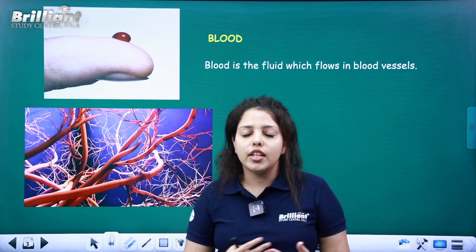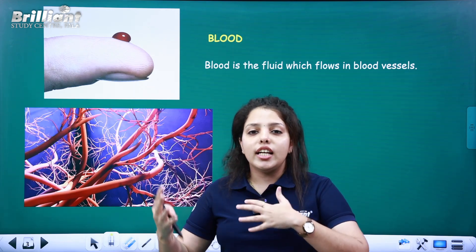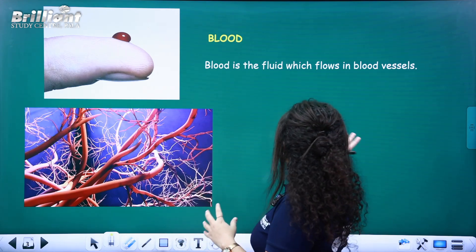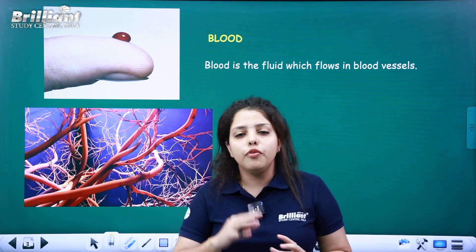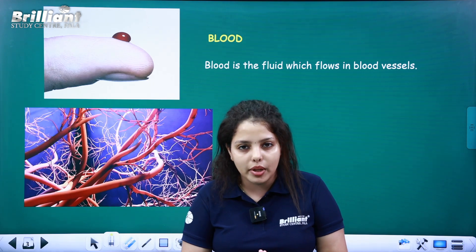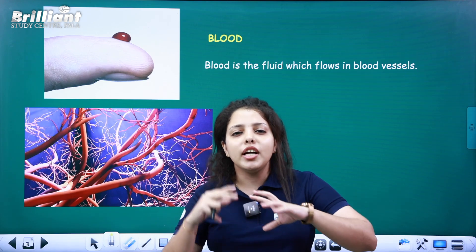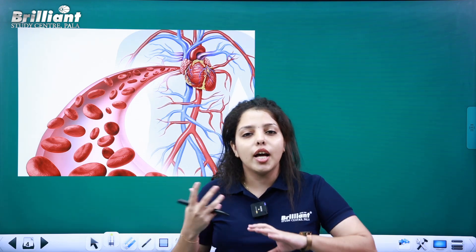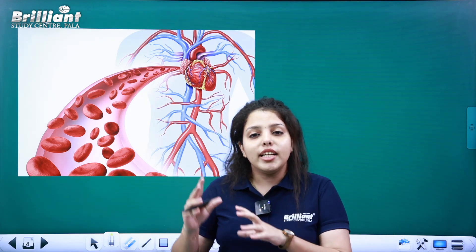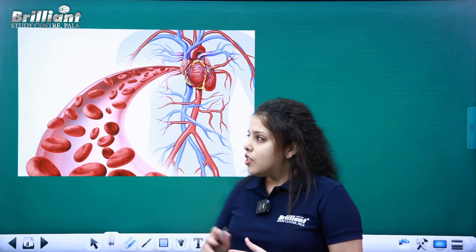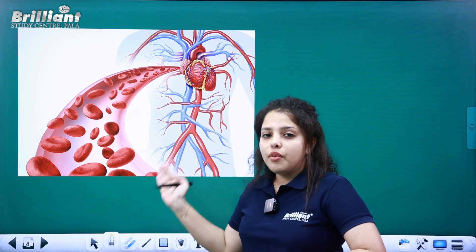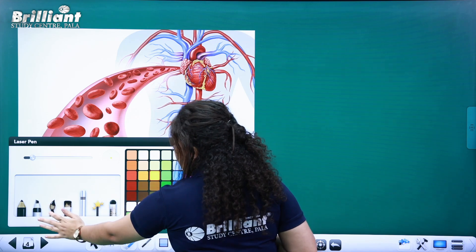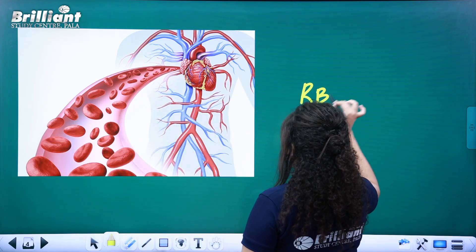In the body we have arteries, capillaries, and veins. Blood is a fluid which is normally flowing in blood vessels. Blood cells flow in the body. You know the RBC, right? You have blood capillaries, arteries, veins, and red blood cells — RBCs are flowing.